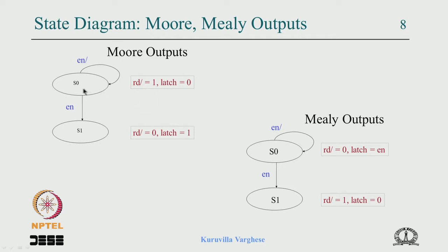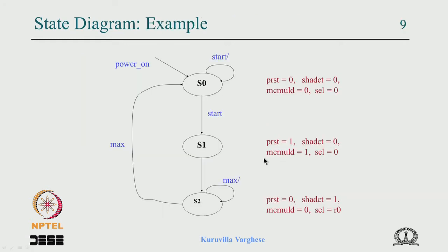We normally specify the output associated with the state. In textbook cases there is a habit of writing the output like input slash output, but when there are a lot of outputs that cannot be done, so it is better to write separately. Here in this state the read bar has become 0 and the latch has become 1. In the case of Mealy output, the output is a function of the input, and in this case the same input is used for the transition condition.